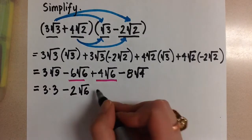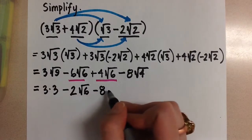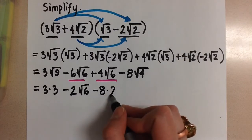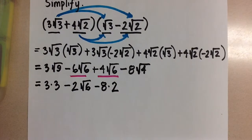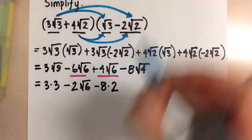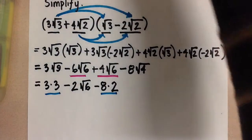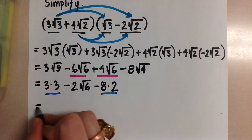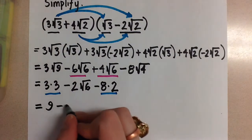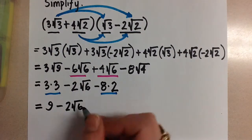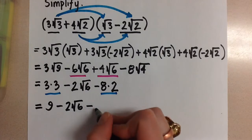And then at the end I have minus 8 times 2. So now I need to calculate those two. So we have 9 minus 2 root 6 minus 16.